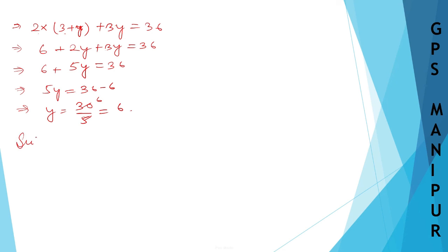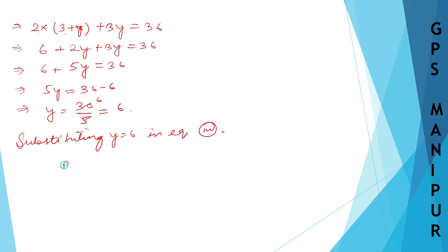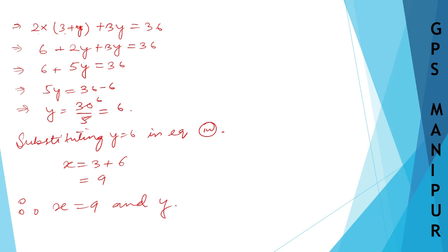Substituting y equals 6 into equation number 3: x equals 3 plus y, so x equals 3 plus 6, which gives x equals 9. Therefore x equals 9 and y equals 6. That's the solution. Thank you so much, we will meet in the next video.